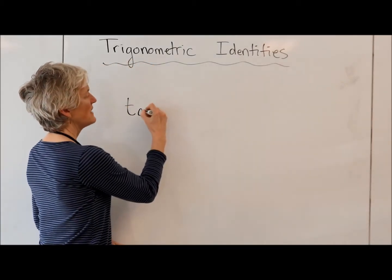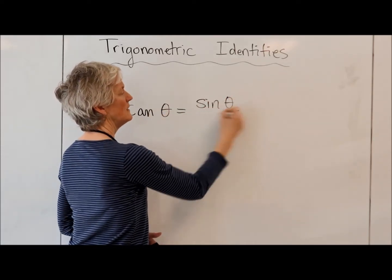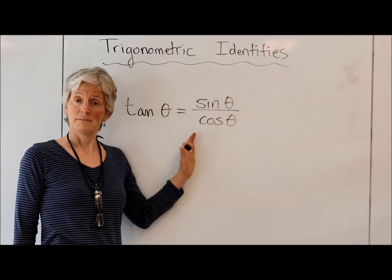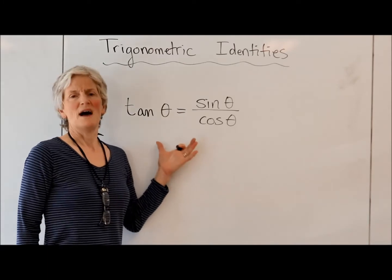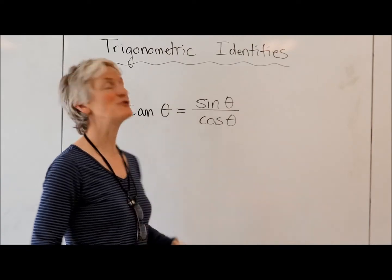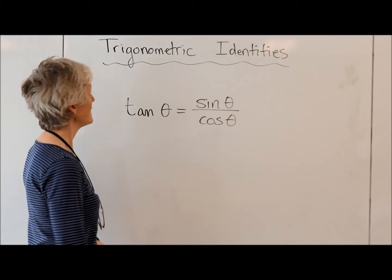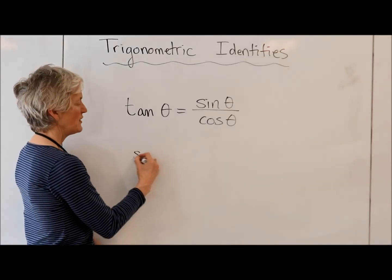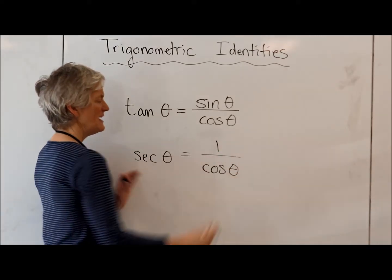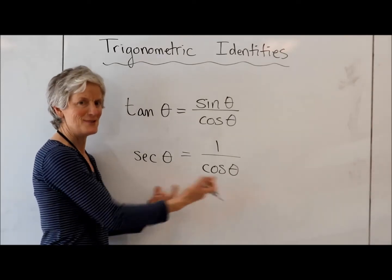For example, tan is equal to the sine of theta over the cosine of theta. This is an identity, and it's true because we've defined tangent in this way. So some identities are true because we have defined them that way, and others are true because we can prove them. Secant of theta is 1 over the cosine of theta — again, an identity because this is how we define secant.